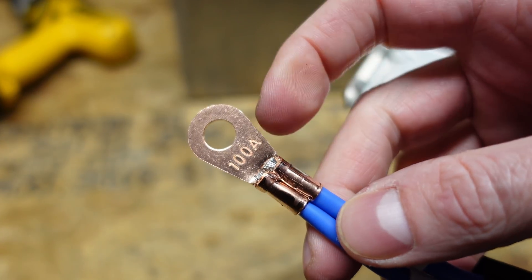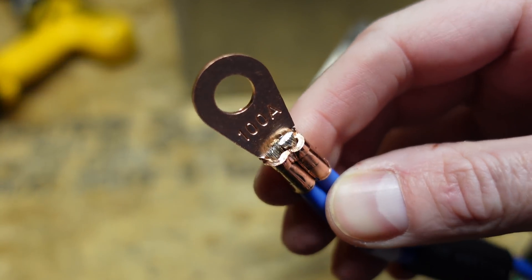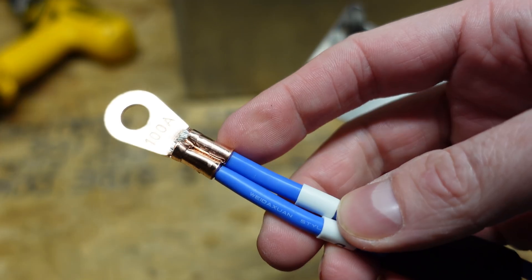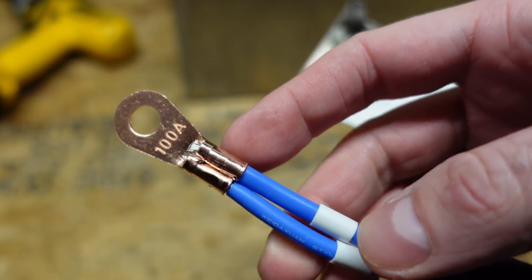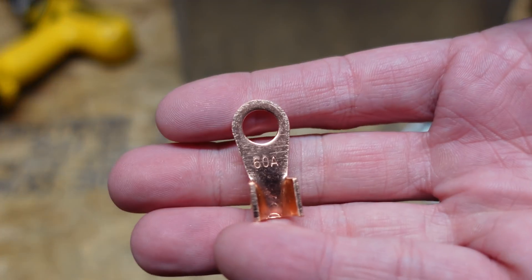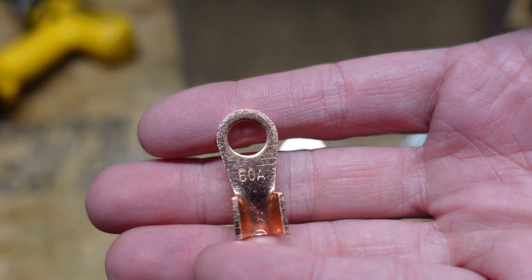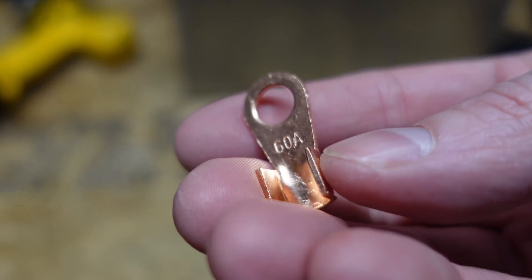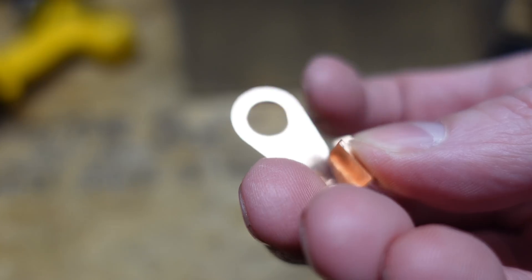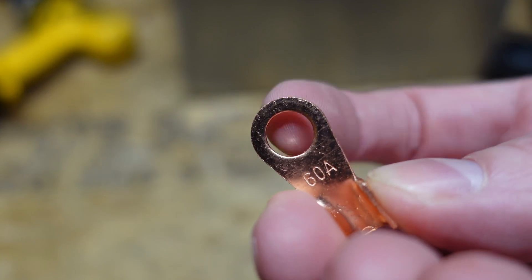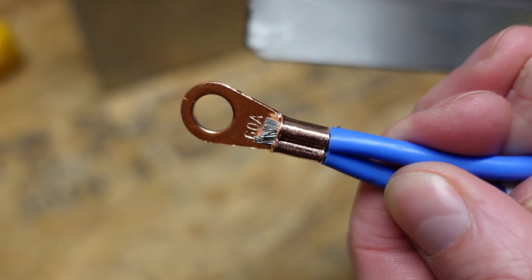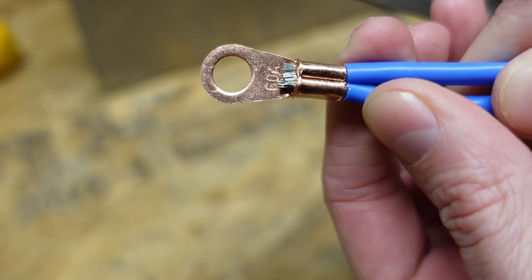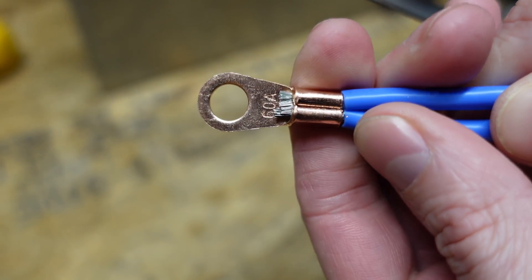Now even though this is a 100 amp ring terminal, apparently these wires are too small for it. This is probably made for something larger than two number 10s. So I'm going to have to use the next step down, which is one of these that is marked for 60 amps. This is a fairly large piece of copper, so I'm not really sure what that amp number on these ring terminals has to do with that, other than maybe the amount of copper around the ring terminal itself. As you can see, that crimp is much better. That one is not going to come off.